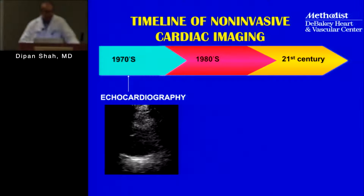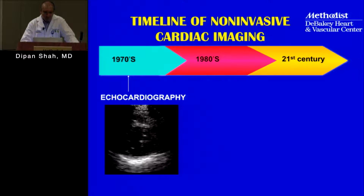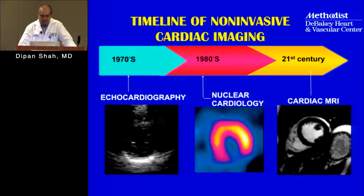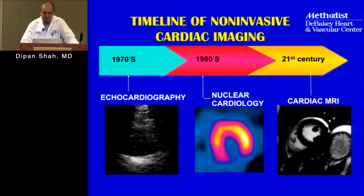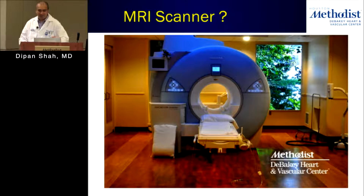As a background in cardiac imaging, we've got a rich heritage with echocardiography. In the 1970s, nuclear cardiology really came about in the 80s, and then cardiac MR and CT are techniques that really came about in the 21st century. Here's an example of an MRI scanner and what it looks like.